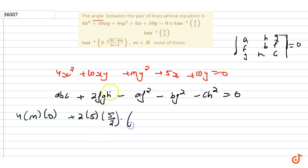Minus a times f², which is 4 times 5², minus b times g², which is m times (5/2)² = 25m/4, minus c times h², where c is 0. This equals zero.